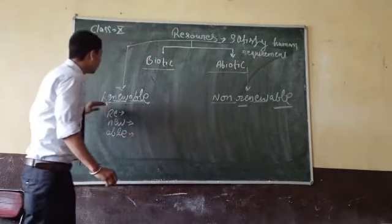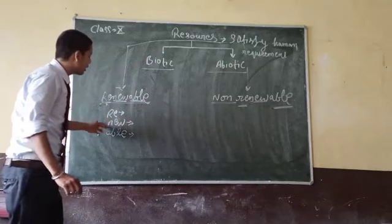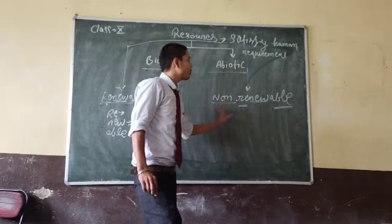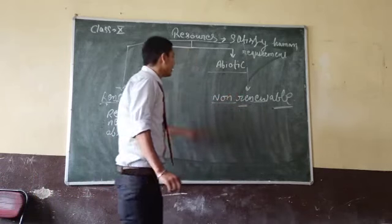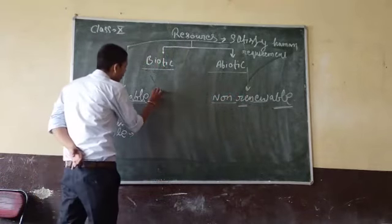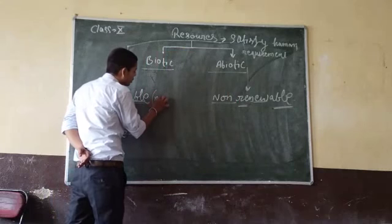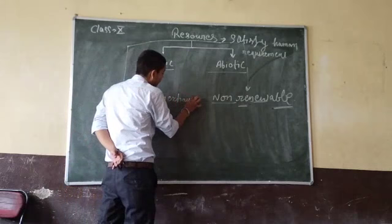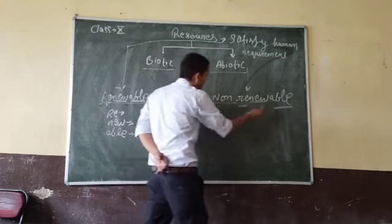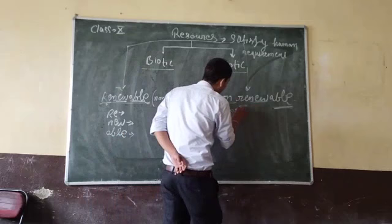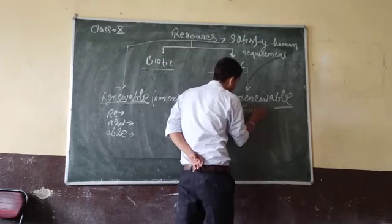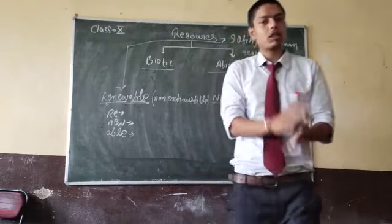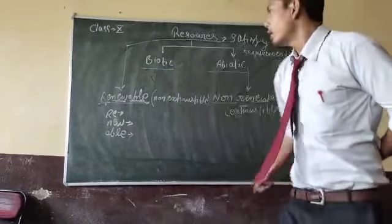So renewable resources are those which have the ability to get renewed. And non-renewable resources are those that do not possess the ability to renew. Renewable resources are also called non-exhaustible. Whereas non-renewable are called exhaustible. What is the meaning of exhaustible and non-exhaustible?